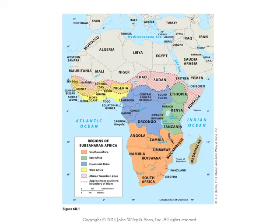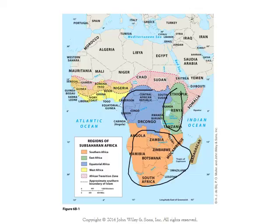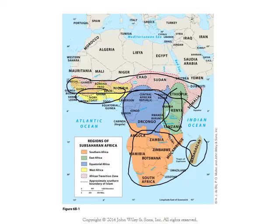The regions we'll be covering are color-coded: southern Africa, east Africa, equatorial Africa, west Africa, transition regions in central Africa, and Madagascar — which must be treated somewhat as a transition region because it is set apart from the mainland.